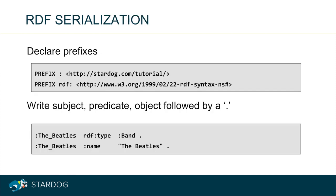When serializing RDF triples, we write them by simply writing the subject, predicate, and object, followed by a period. You need the prefix declarations as well, but if you are using Stardog, these prefixes are stored in the database metadata so you don't have to type these declarations in your queries or data files. An empty string can be defined as a prefix — that's called the default namespace.